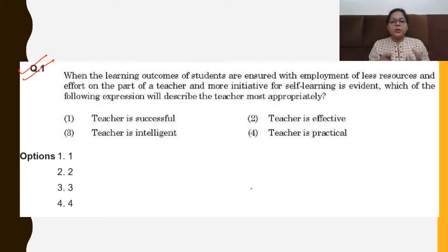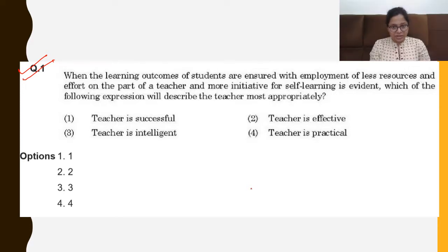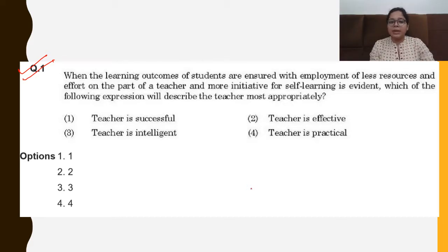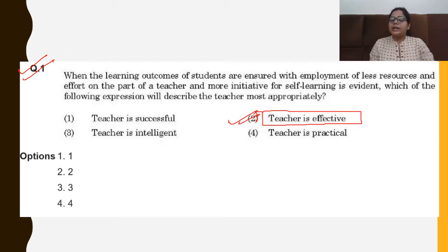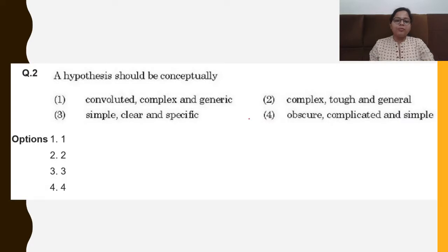Question 1: When the learning outcomes of students are ensured with employment of less resources and effort on the part of the teacher, and more initiative for self-learning is evident, which expression describes the teacher most appropriately? The answer is that the teacher is effective, because in a teaching context, 'effective' is the right word to use.